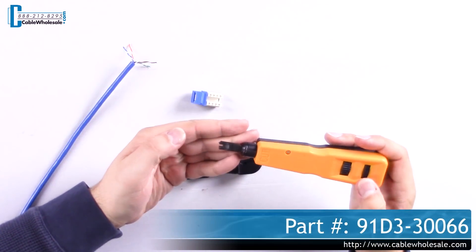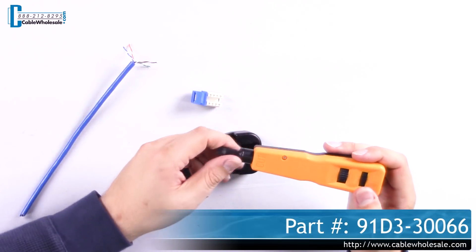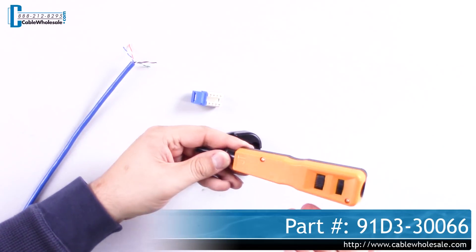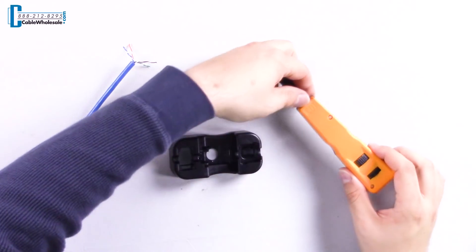In addition to the punch down stand, Cable Wholesale also carries a punch down tool that includes the blade along with high and low impact adjustments. Now let's put it into action.